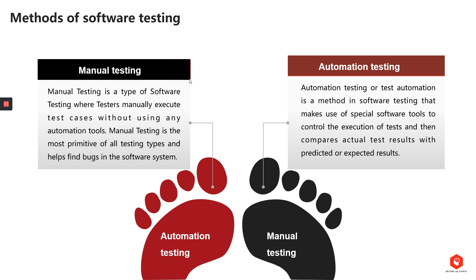A couple of important terms in manual testing: a test case is a set of actions executed to verify particular features or functionality. You go step by step, writing the action and the expected behavior at each step. When the test case is executed, if all steps pass, the whole test passes — it's a kind of documentation. A test suite is a group of test cases selected by some criteria, which is a deal between team members on how they organize their test cases, by functionality or something else.